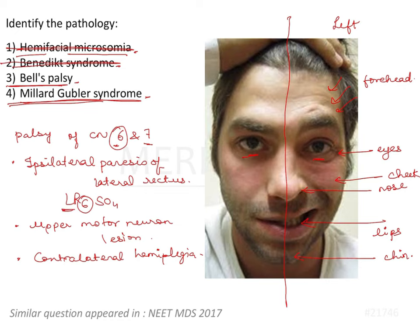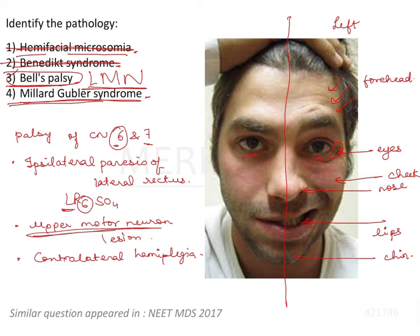In the image there is facial paralysis and lateral rectus appears slightly affected. To differentiate between Millard Gubler syndrome and Bell's palsy: Bell's palsy is a lower motor neuron (LMN) lesion, while Millard Gubler is an upper motor neuron lesion. In a lower motor neuron lesion the forehead is also affected, whereas in an upper motor neuron lesion the eyebrow and forehead are less likely to be affected.